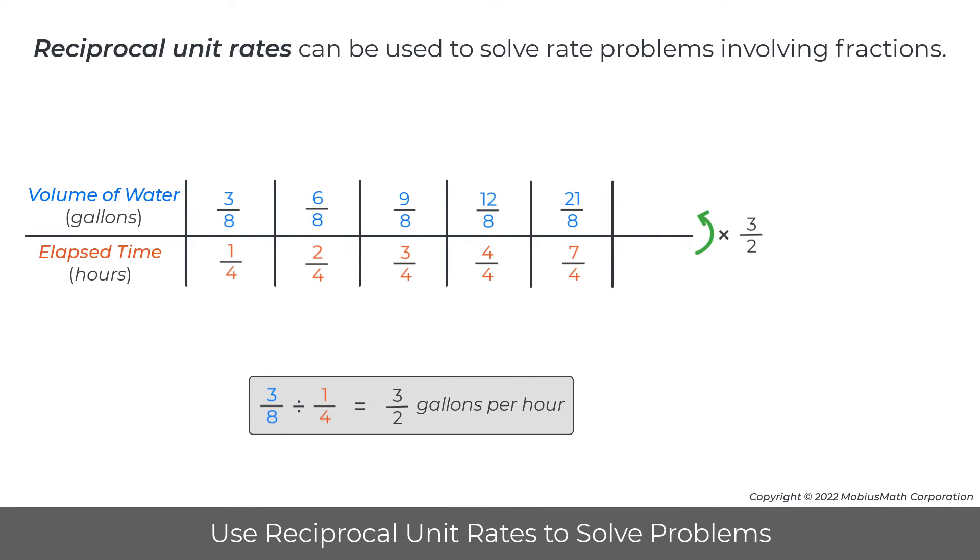So any value for elapsed time can be listed in the bottom row, then the value for time can be multiplied by three-halves to find the volume of water that has leaked from the faucet in that amount of time.